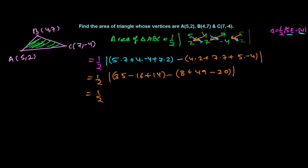So now let's solve it. One by two: 35 minus 16 and plus 14, so it's going to be minus 2, and 35 minus 2 that's 33. And then minus: 8 plus 49 it's going to be 57, 57 minus 20 so it will be 37. So now 1 by 2 times minus 4, but since it's modulus value you can take 4 outside positive because area of the triangle can never be negative. So it's going to be 2 square units.